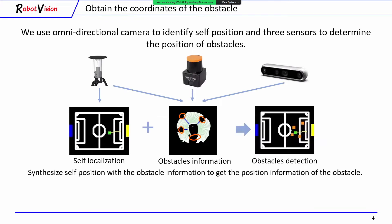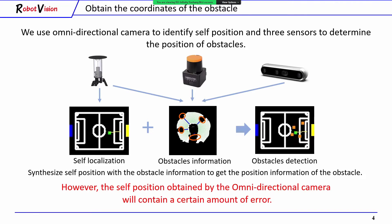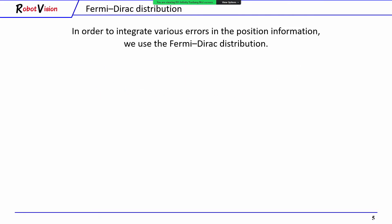We synthesize the self-position with the obstacle information to get the position information of the obstacles. However, the self-position obtained by the omnidirectional camera will contain a certain amount of error. In order to integrate the overall errors in the position information, we use the Fermi-Dirac distribution.